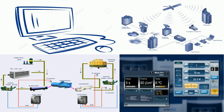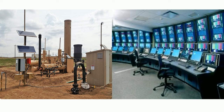SCADA systems have mainly four functions: data acquisition, data presentation, and control. Sensors, either digital or analog, and control relays directly interface with the managed system. The communications network connects the SCADA master unit to the RTUs in the field. Remote telemetry units are small computerized units deployed in the field at specific sites and locations. RTUs serve as local collection points for gathering reports from sensors and delivering commands to control relays.